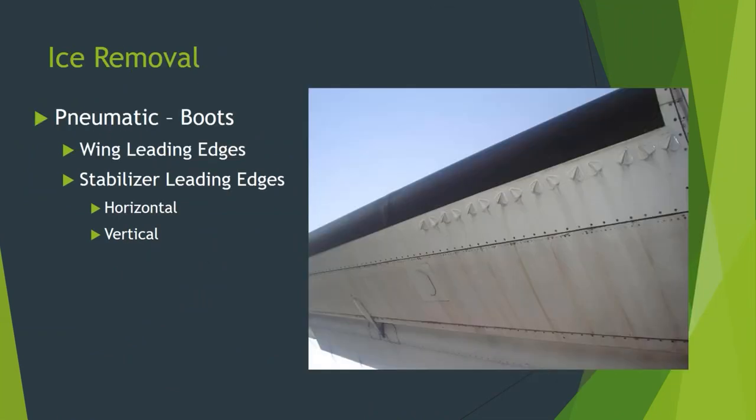Another form of ice protection for wings and leading edges is ice removal using pneumatic boots. These are usually found on smaller transport aircraft — small regional jets, corporate aircraft, and turboprops. The wing leading edge has a rubber material boot that runs along the leading edge. They're basically a large sticker with an air line running to them. Air can be sent to them, and they can be installed on horizontal wings, horizontal stabilizers, and the vertical stabilizer as well.